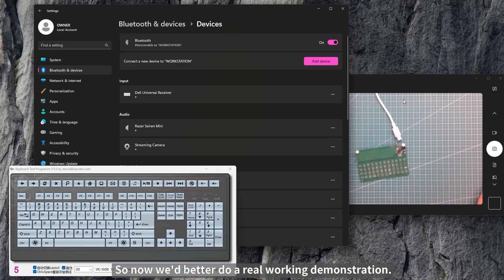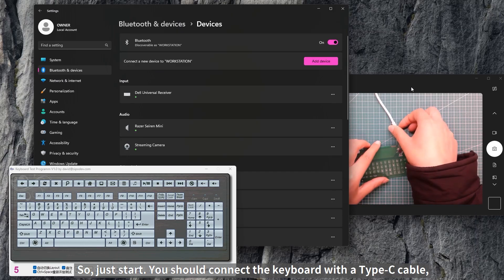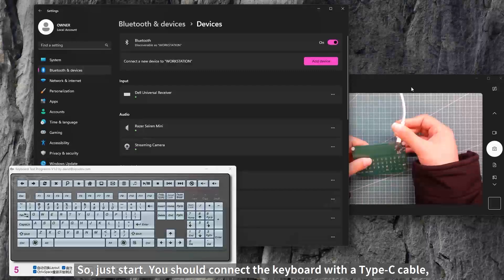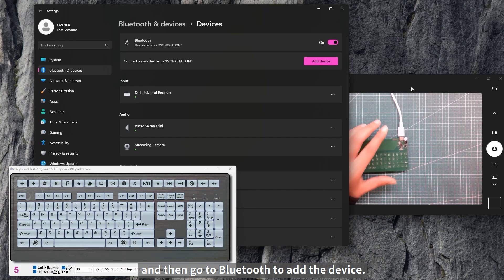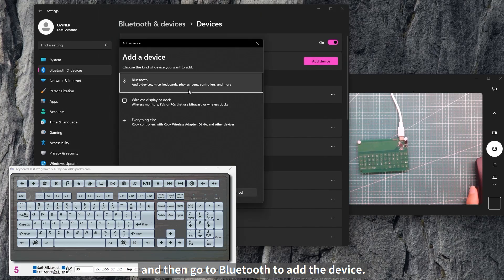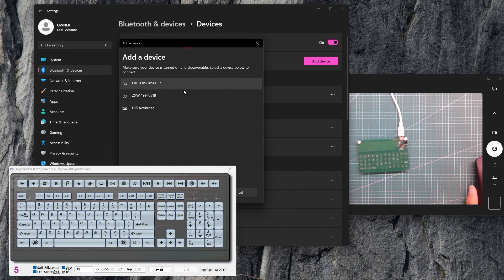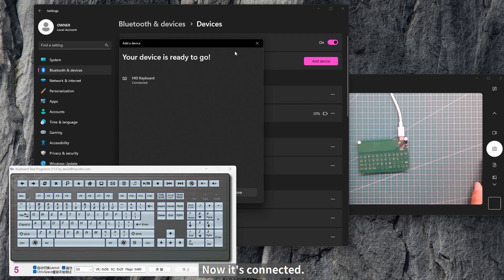So now, we pass to the real-world demonstration. To start, you should connect the keyboard with a Type-C cable. And then, go to add device in Bluetooth and connect HIDK Word. Now, it's connected.